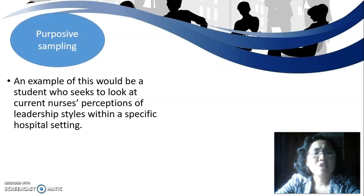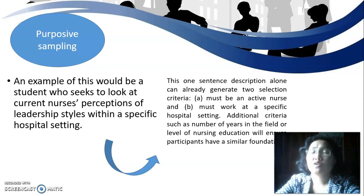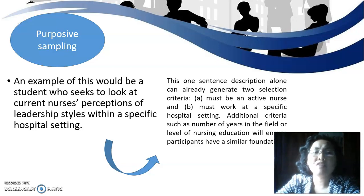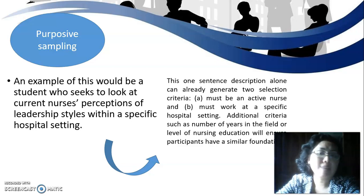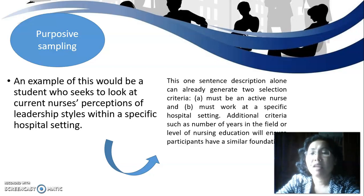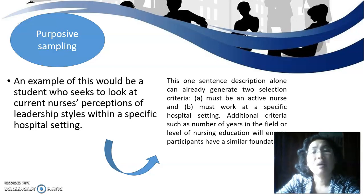An example of purposive sampling would be a student who seeks to examine current nurses' perceptions of leadership style within a specific hospital setting. This description alone generates two selection criteria: the participant must be an active nurse, and must work at that specific hospital. Additional criteria such as years in the field or level of nursing education ensure participants share a similar foundation.